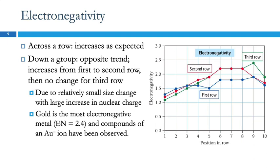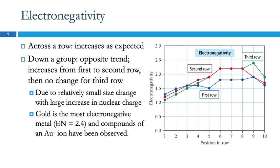For electronegativity, going across we see an increase, which is what we would expect — going toward fluorine, the trend is more electronegative. Going down the group, we get an increase in electronegativity from the first row to the second row and no change for the third row. Again, we've got relatively small size changes and big changes in nuclear charge. Gold is actually the most electronegative metal, with an electronegativity of 2.4.